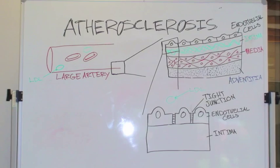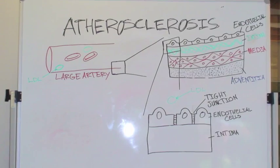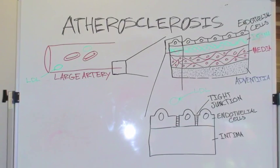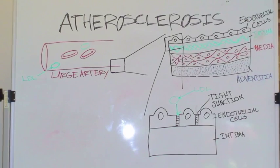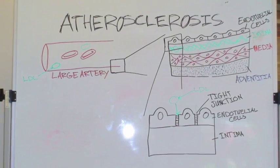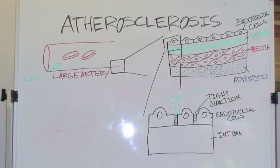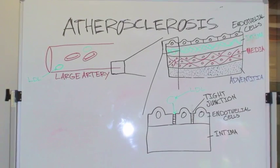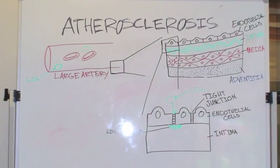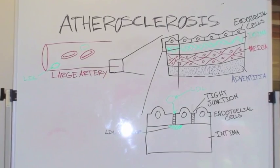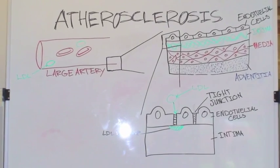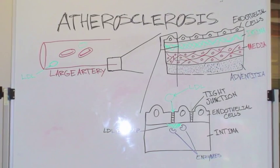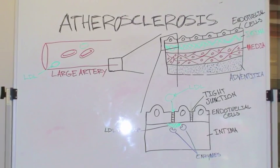Increased low-density lipoprotein in blood plasma can passively diffuse through the endothelial cell-type junctions and begin to accumulate in the intima. The retention of this LDL is mediated by interactions between matrix proteoglycans and apolipoprotein B. The LDL in the intima is then modified by enzymes through oxidation, lipolysis, and proteolysis.